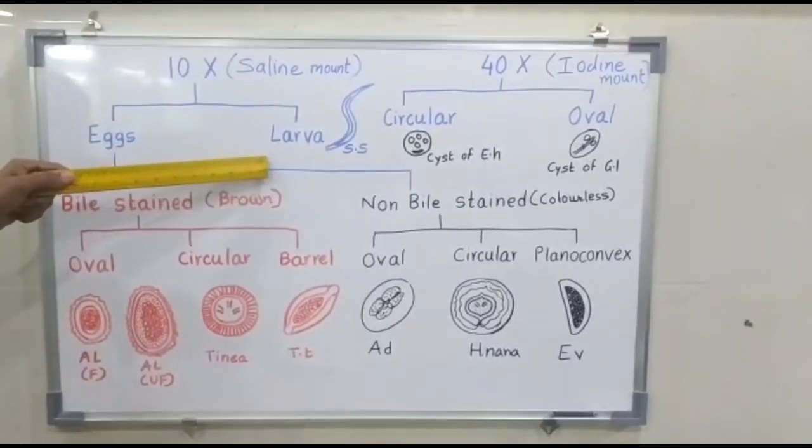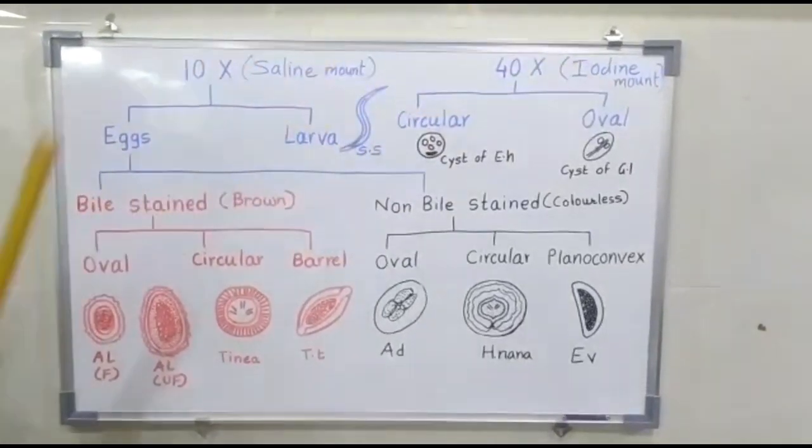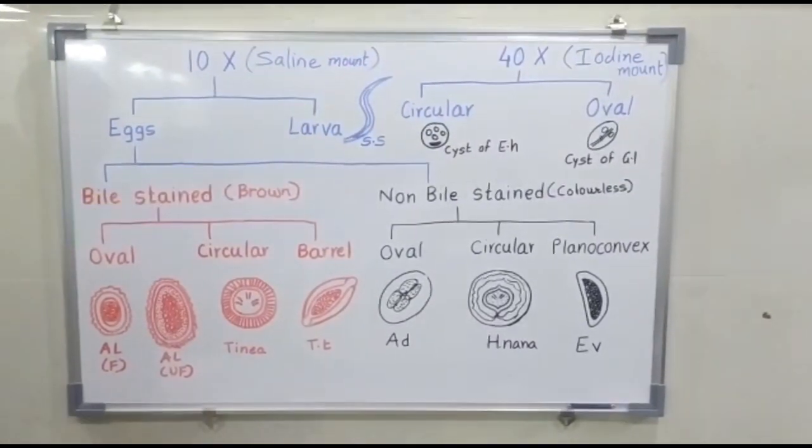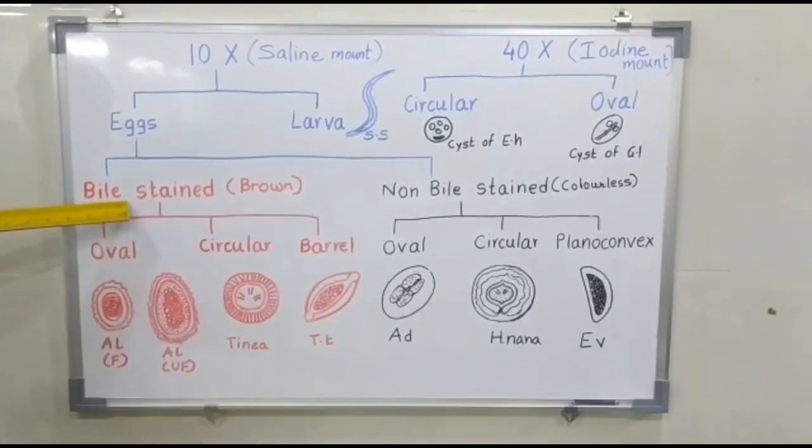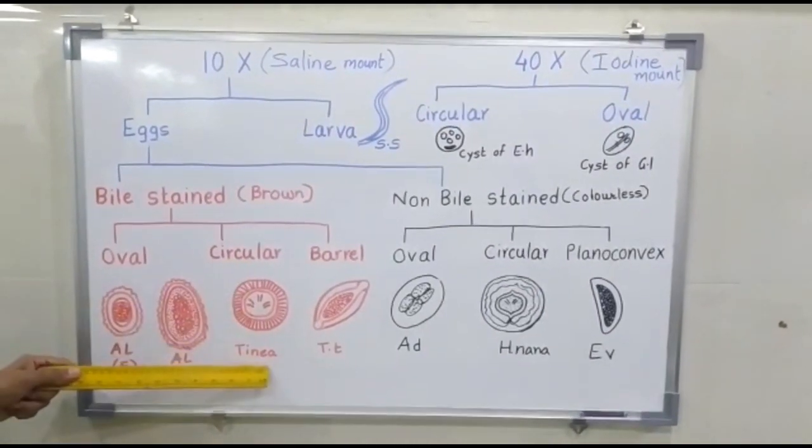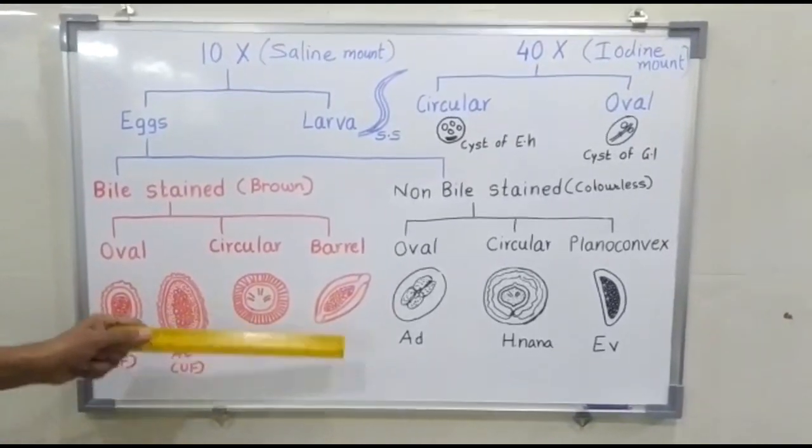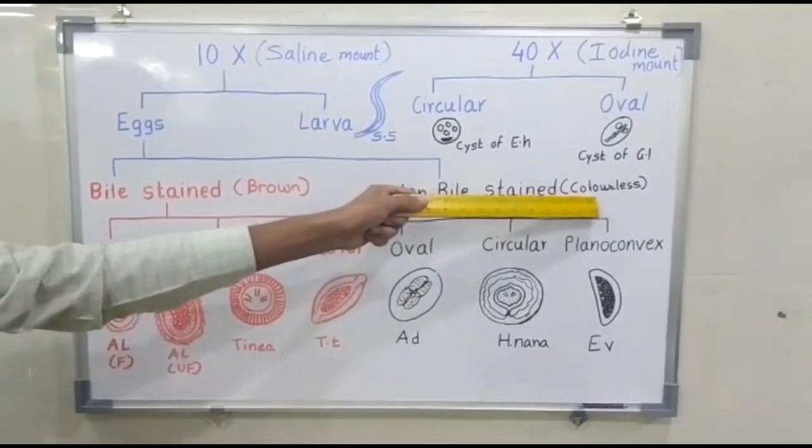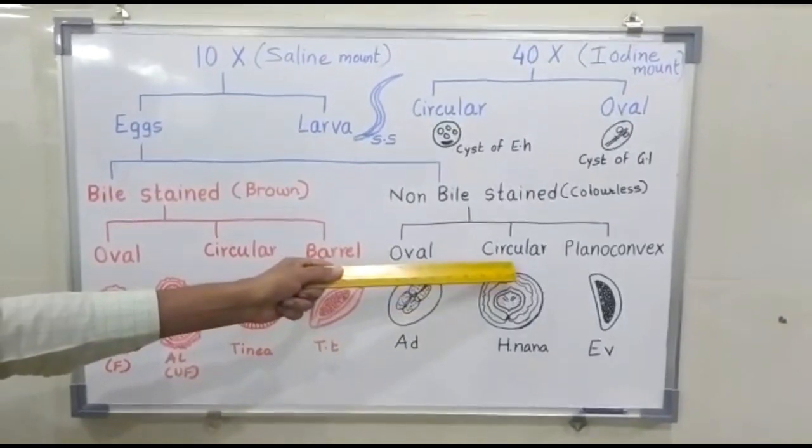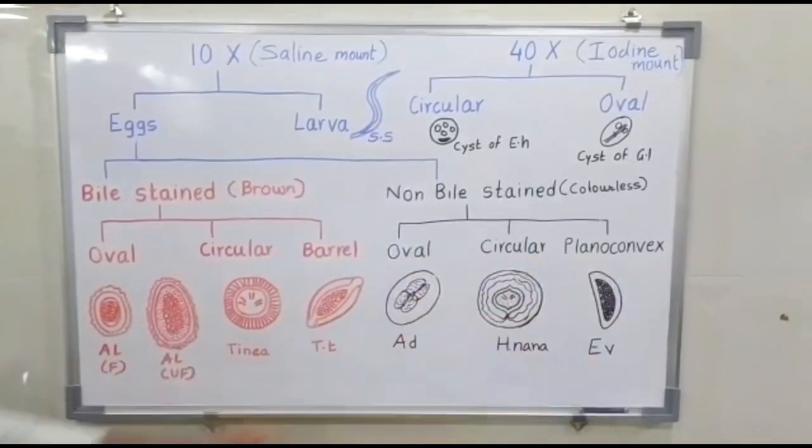Let's learn how to identify eggs. Remember, eggs and larvae are to be seen under 10x in saline mount and cysts under 40x in iodine mount. A larva of S. stercoralis can easily be identified by its structure. Brown color bile stained eggs can be oval shape, which are eggs of Ascaris lumbricoides. Circular shape are of Taenia species. Barrel shape are of Trichuris trichiura. Non-bile stained eggs are colorless. The oval shape eggs are of Ancylostoma duodenale. Circular shape of H. Nana. And planoconvex eggs of E. vermicularis.